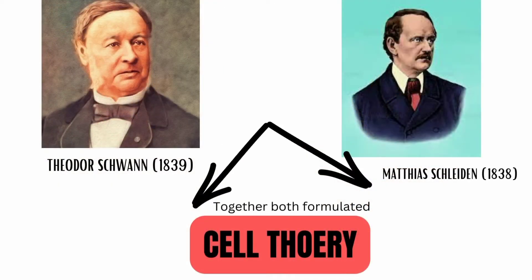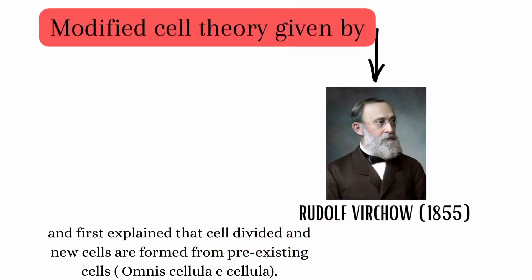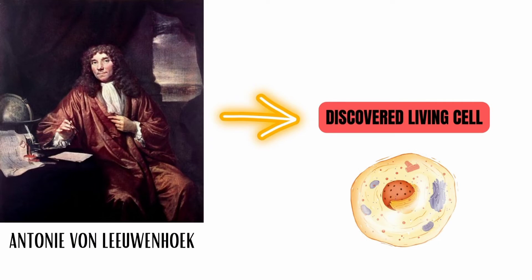Theodor Schwann and Matthias Schleiden together formulated the Cell Theory. The modified Cell Theory was given by Rudolf Virchow in 1855. He first explained that cells divide and new cells are formed from pre-existing cells. His famous statement is 'Omnis cellula e cellula.'